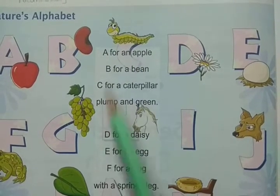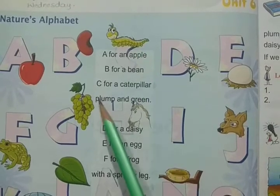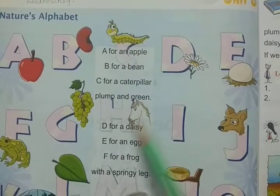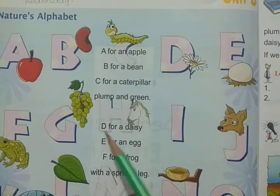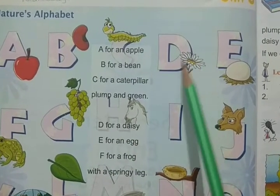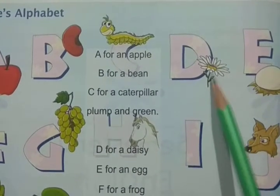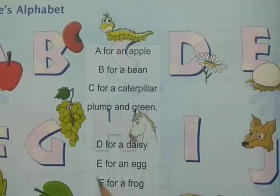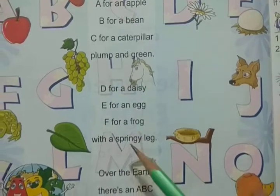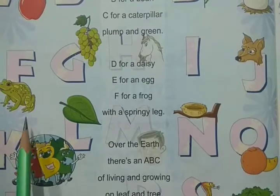Caterpillar — plump means what? Plump means round and flat and green. D for a daisy — daisy means this flower, a small white flower with a yellow center. This is the daisy flower. E for an egg, F for a frog with a springy leg. Springy means jumping — a jumping leg.